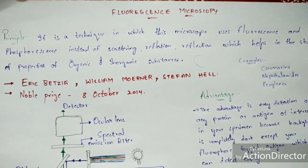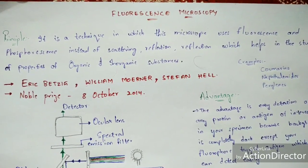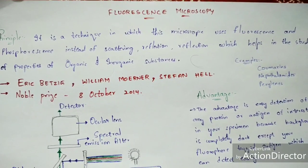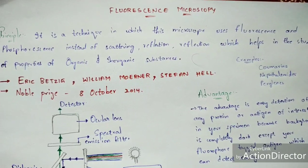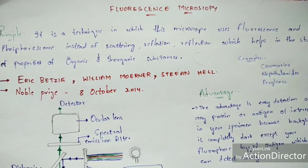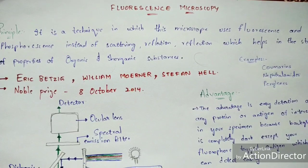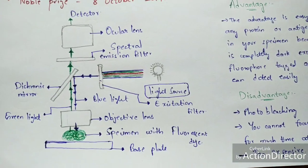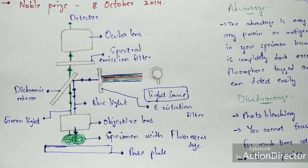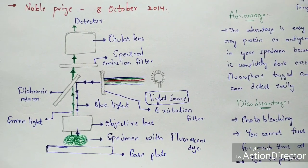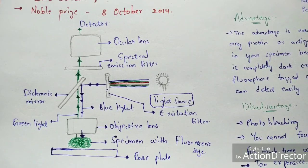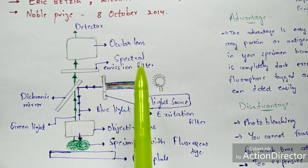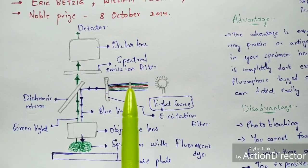Fluorescent microscopy is a technique in which the microscope uses fluorescence and phosphorescence instead of scattering and reflection, which helps in the study of properties of organic and inorganic substances. I'm going to show you the mechanism of fluorescent microscopy, and at the end of the video I'll show you the outward structure of the microscope and the microscopic images formed.